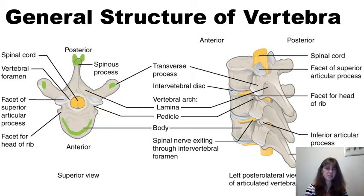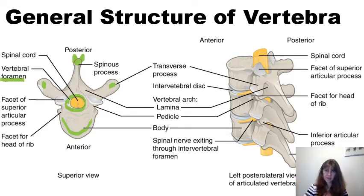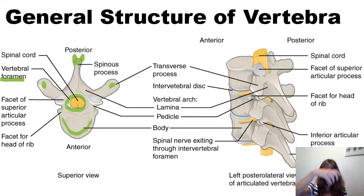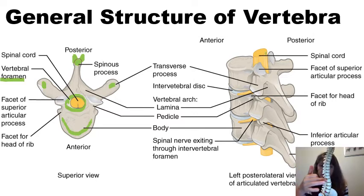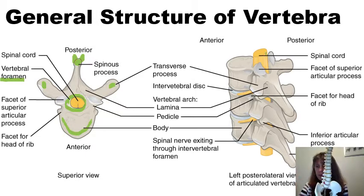As we look at a vertebra, we can also see that there is a special foramen — the term foramen means hole. This is the vertebral foramen, which allows the spinal cord to traverse from our brain downward. As the vertebrae are stacked up on one another, the vertebral foramina form a nice passage or canal to protect the spinal cord. There are also holes formed between the vertebrae laterally that allow spinal nerves to exit, referred to as intervertebral foramina.